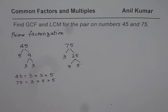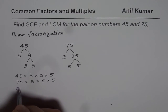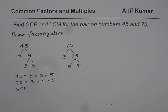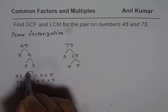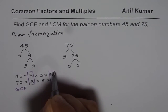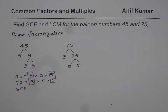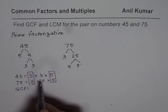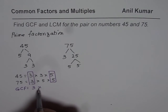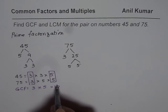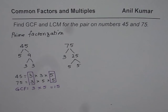Now let us find the greatest common factor. We circle the common factors. We have 3 as a common factor, and we also have 5 as a common factor. The greatest common factor is the product of common factors. So we multiply 3 and 5 — 3 times 5 gives us 15. So 15 is the greatest common factor.